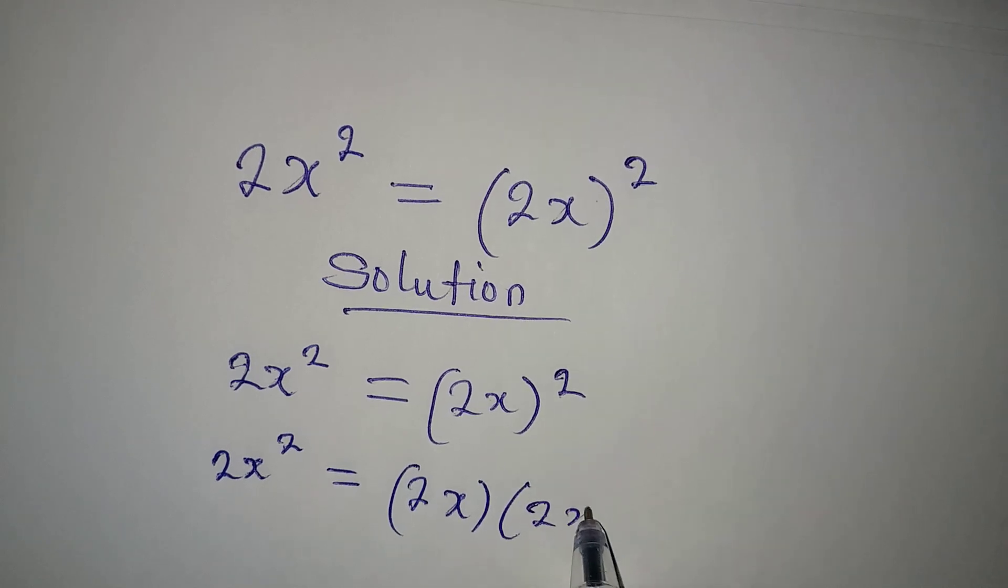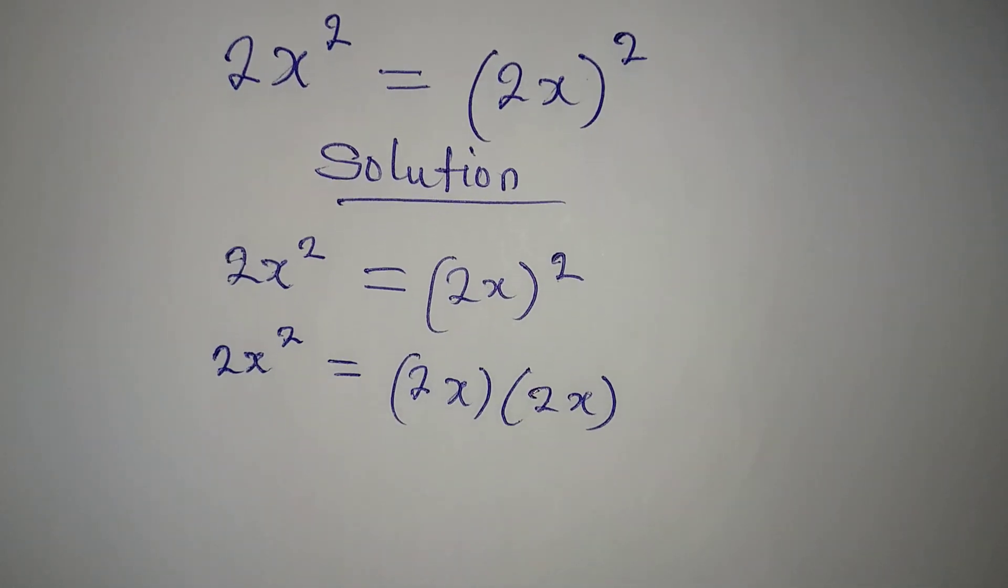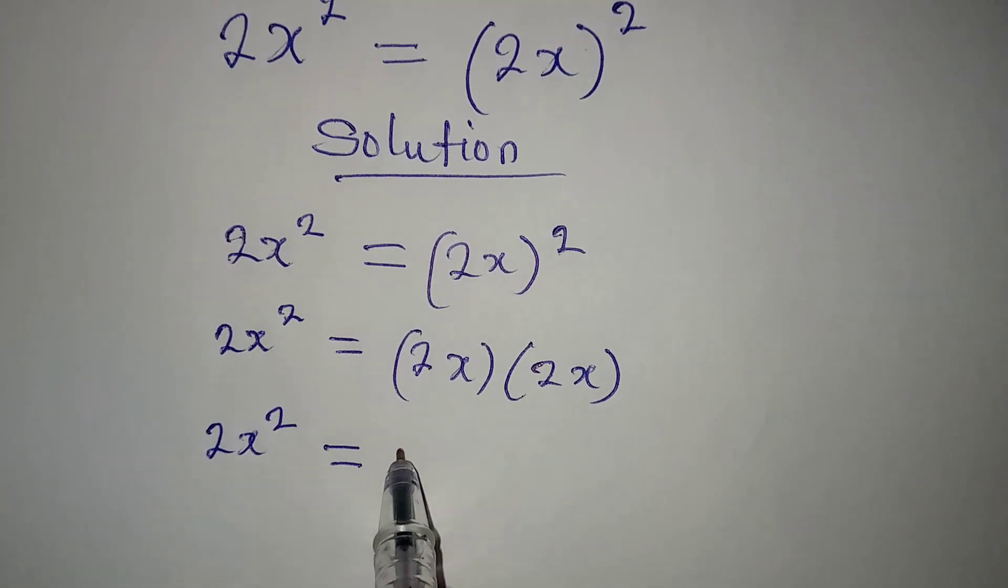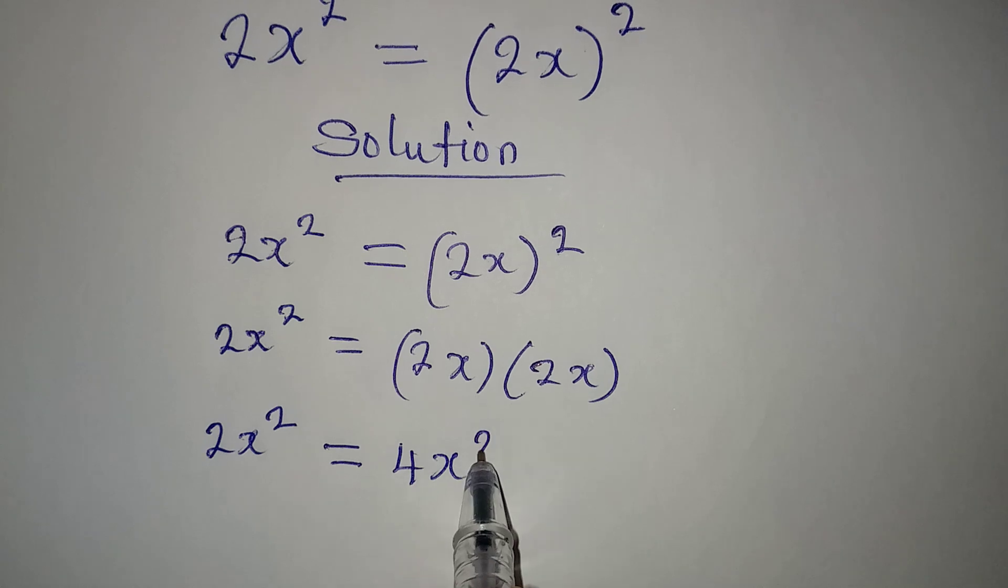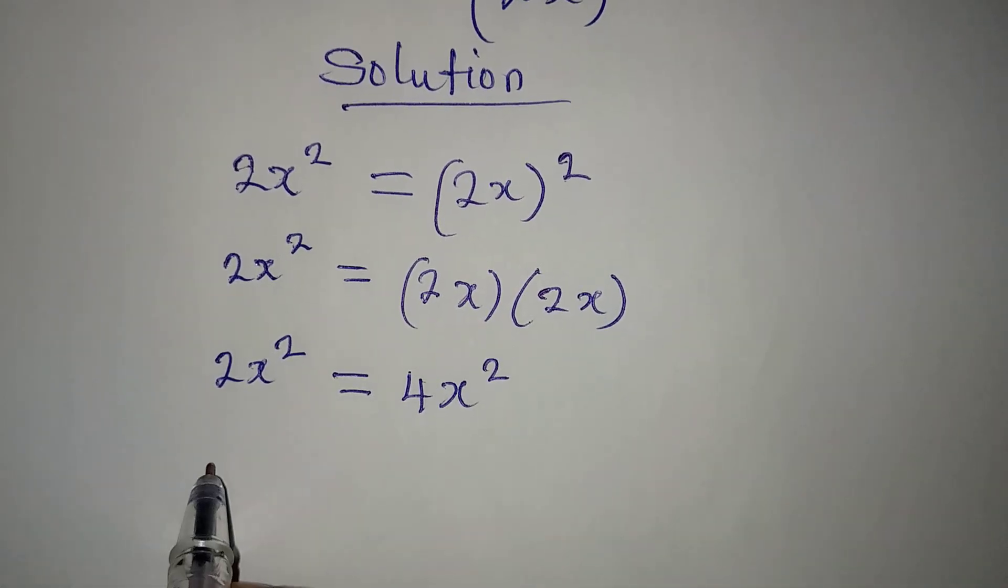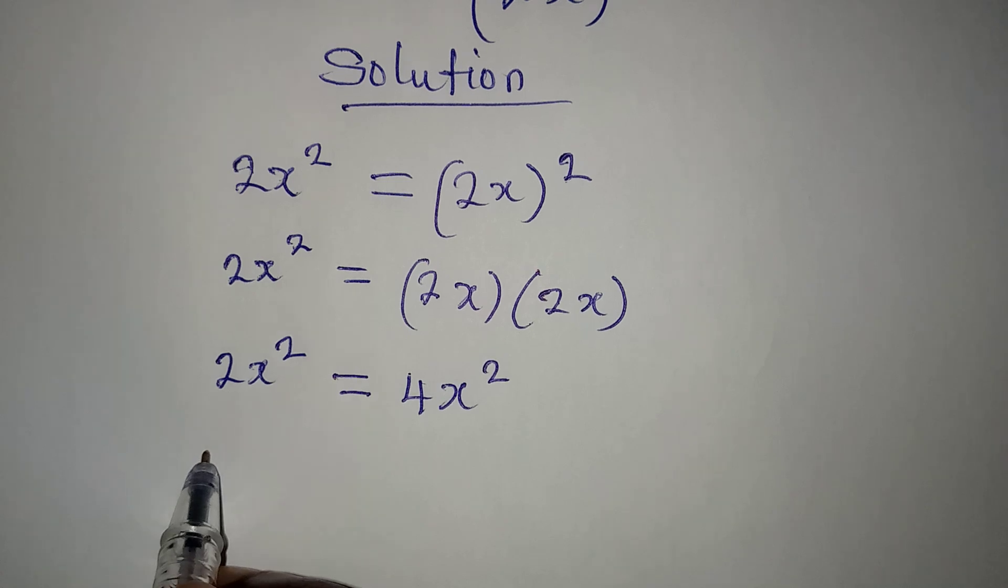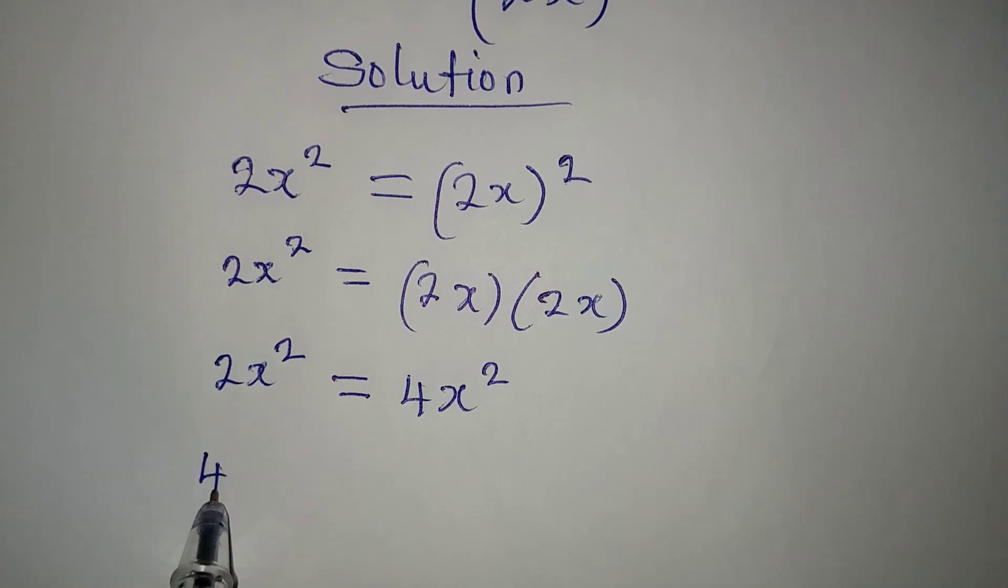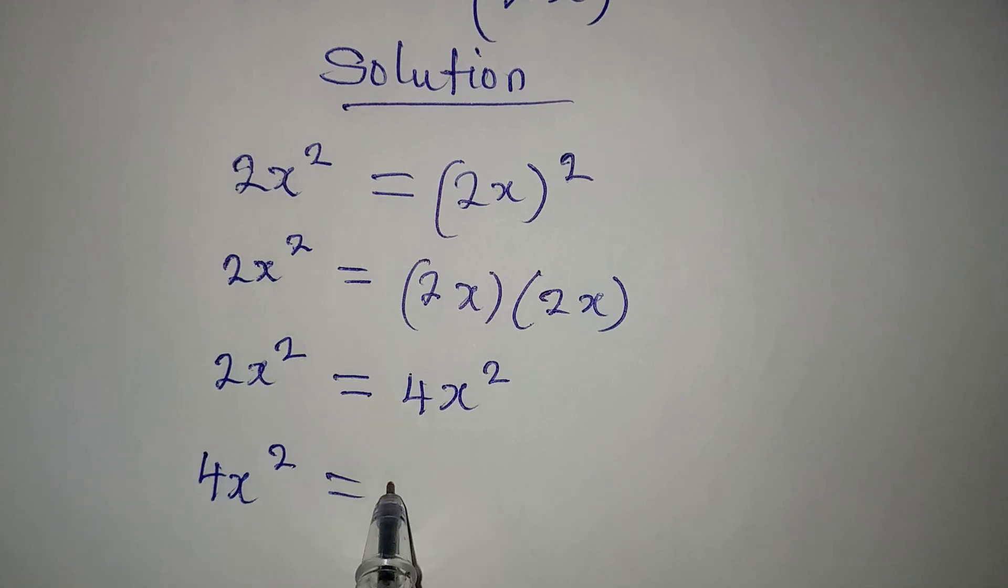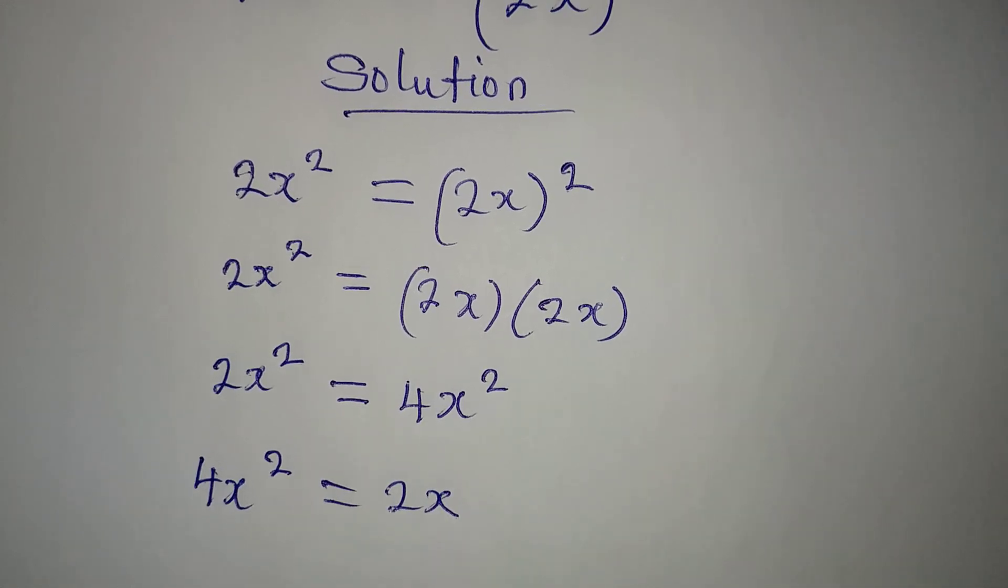(2x)² means 2x times 2x. Now, 2x squared here will be equal to 4x². I want to write this first, so I have 4x² equal to 2x².